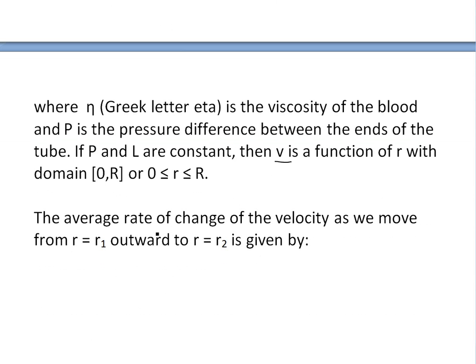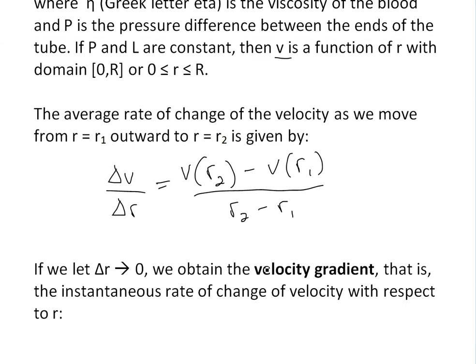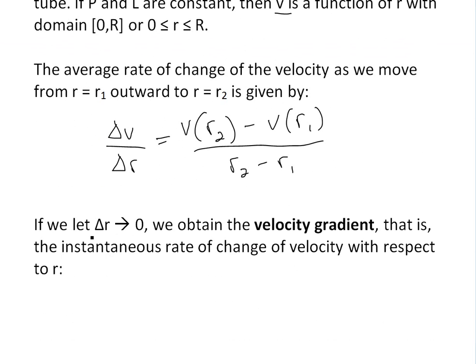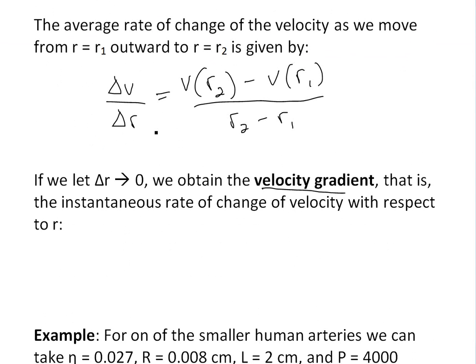The average rate of change of velocity as we move from r1 outward to r2 can be written as delta V over delta r. This equals velocity at r2 minus velocity at r1, all divided by r2 minus r1. If we let delta r approach zero, we obtain the velocity gradient.